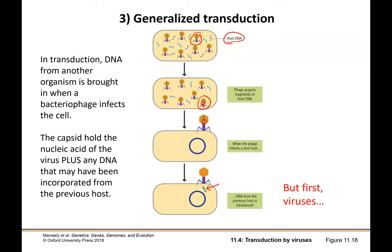This happens because when viruses replicate, they take their own DNA, replicate their own DNA, use the cell to produce more viruses, and then take any DNA that's encapsulated in that virus package into the next cell. This is sort of general transduction. We're going to take a break here and talk about viruses and how this virus actually picks up this piece of host DNA.